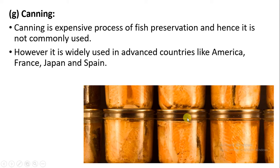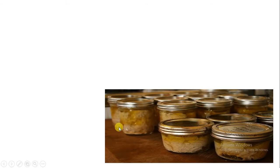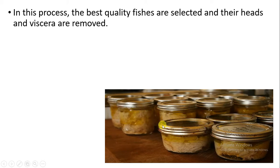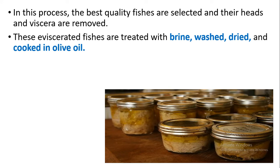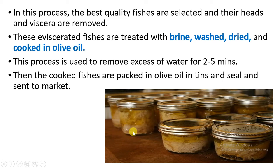In canning, eviscerated fishes — those without internal organs — are treated with salt water (brine), then washed and dried, then cooked in olive oil. The excess amount of water is removed for about 2 to 5 minutes, and then the fishes are cooked and packaged in olive oil tins, sealed, and sent to market.